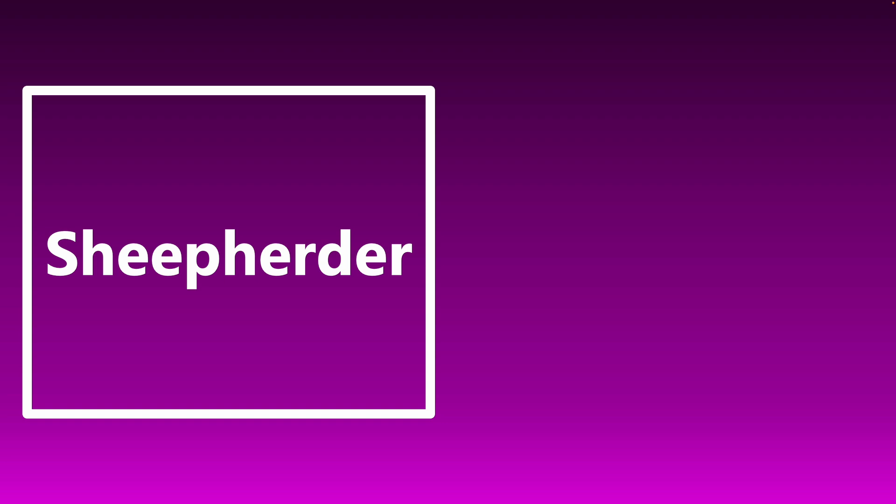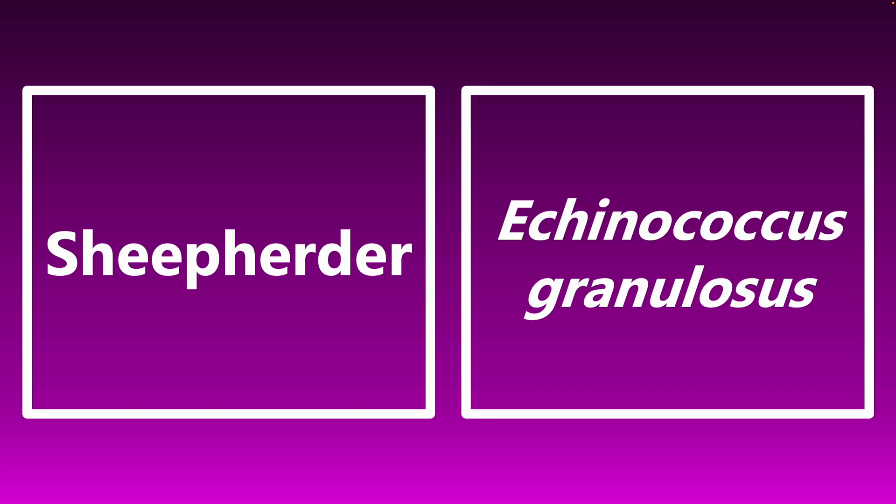A sheep herder — if you see a sheep herder on the exam, there's a specific organism to associate with: Echinococcus granulosus. Remember, this is a tapeworm, and sheep are an intermediate host for this organism. So if you see a sheep herder, that is the association you should be making.